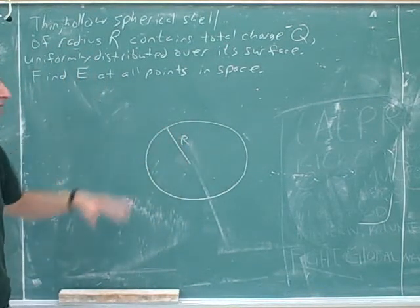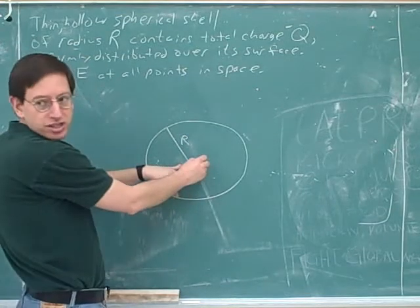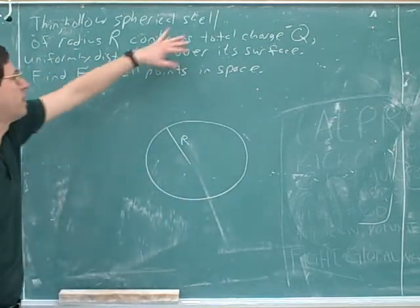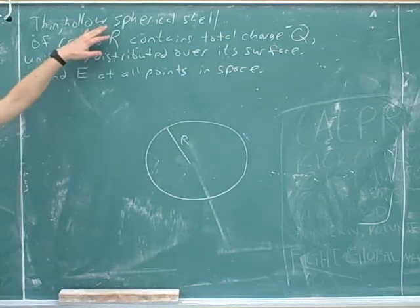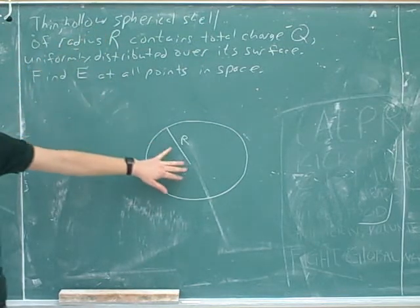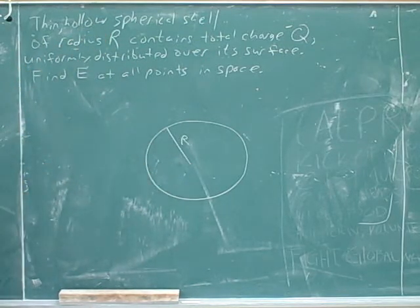But all the charge is on the sphere. There's no charge in the interior. That's what's indicated by the fact that it's a shell. And then, redundantly, we also said it was hollow. Both of those things indicate there can't be any charge on the interior, only on that surface.